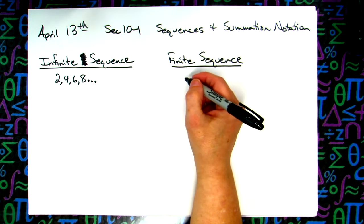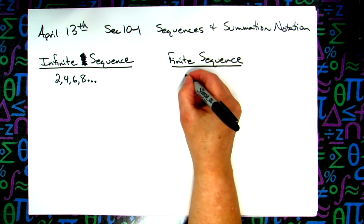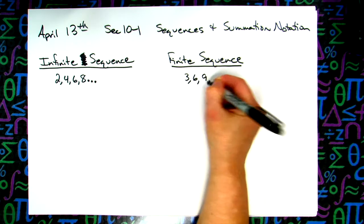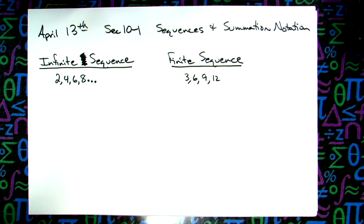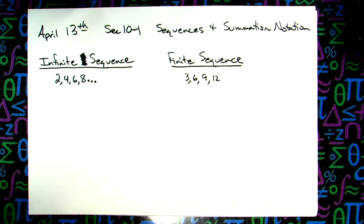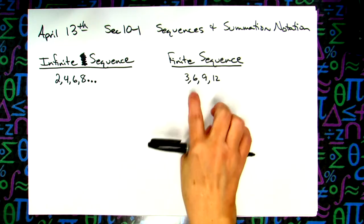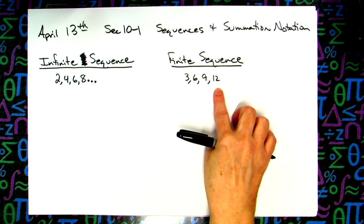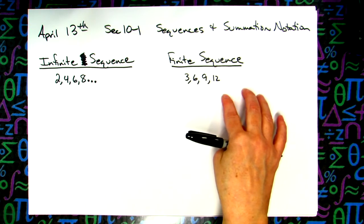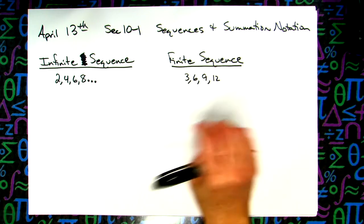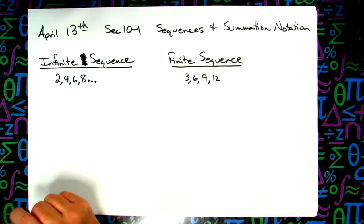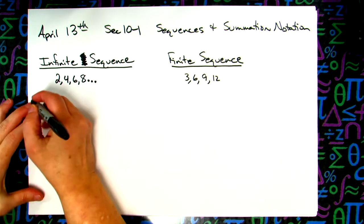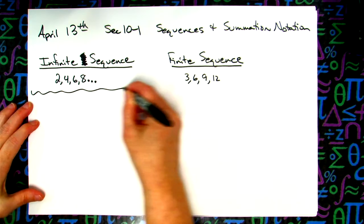A finite sequence could be like 3, 6, 9, 12 — and that's it. No dot dot dot at the end. The formal definition: a finite sequence's domain consists of the first n positive integers. This finite sequence has four terms in it. Just remember the difference between infinite and finite — three little dots or no three little dots.